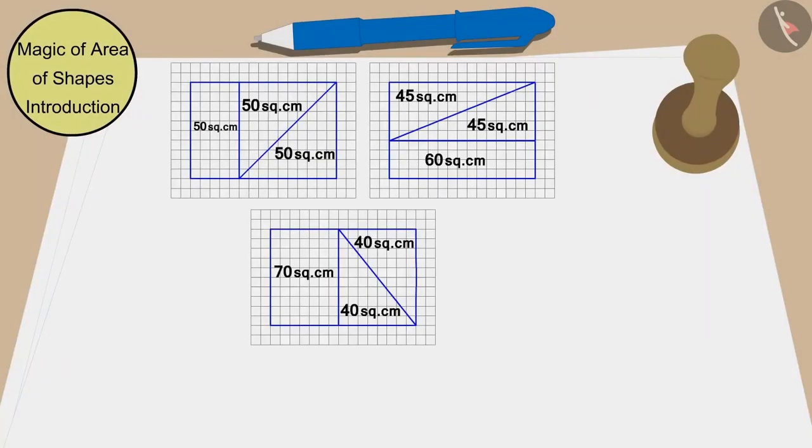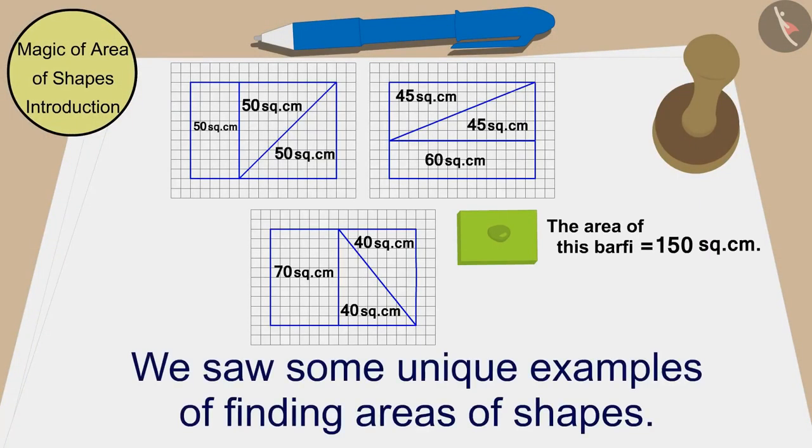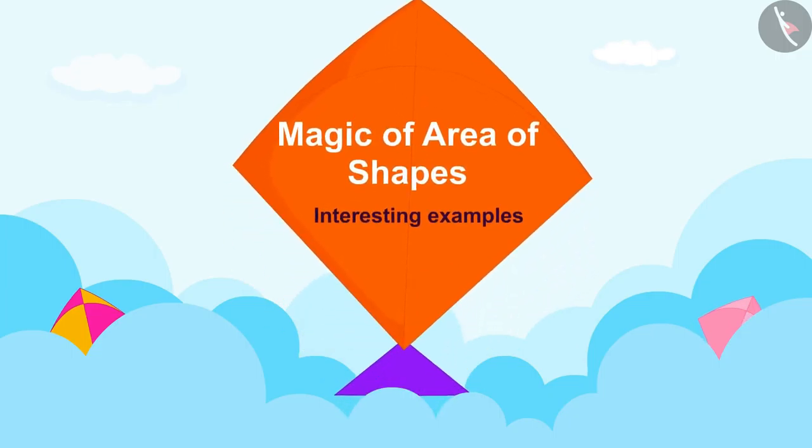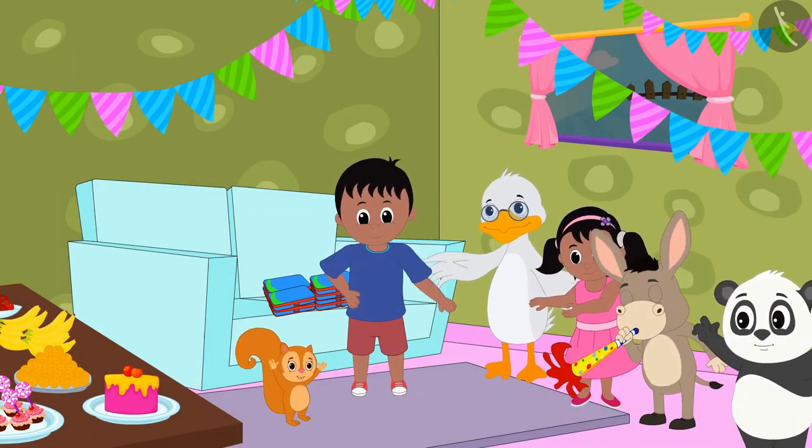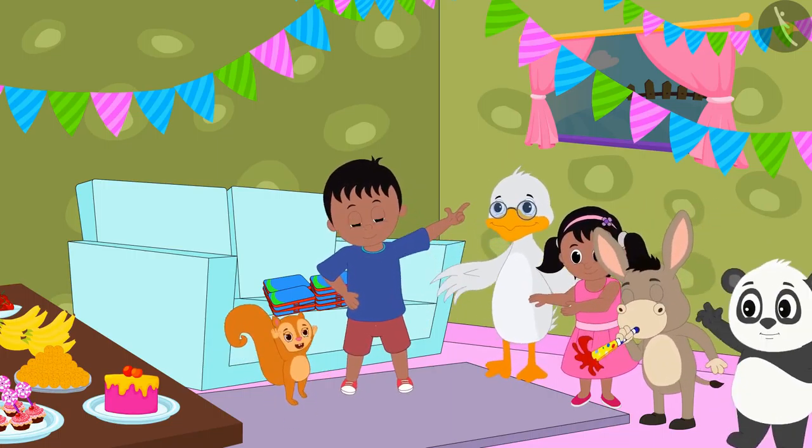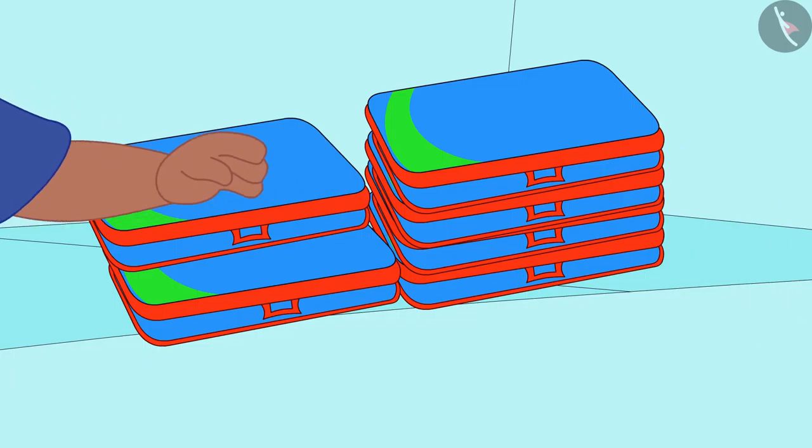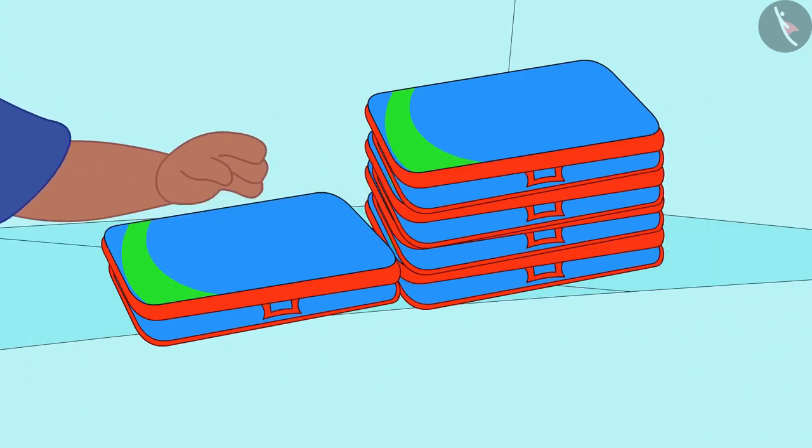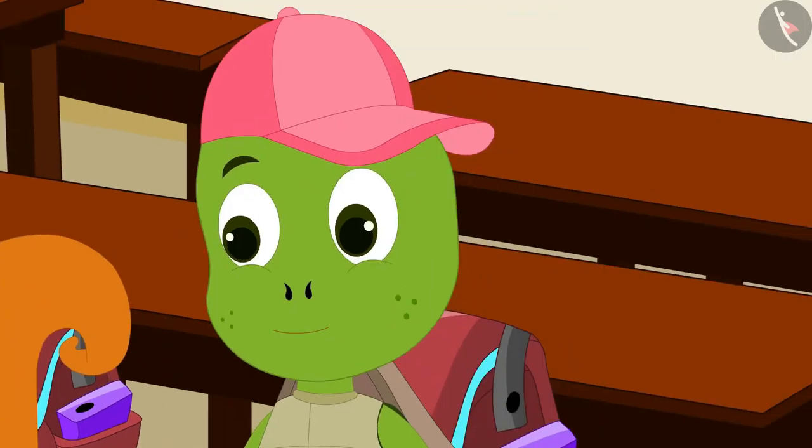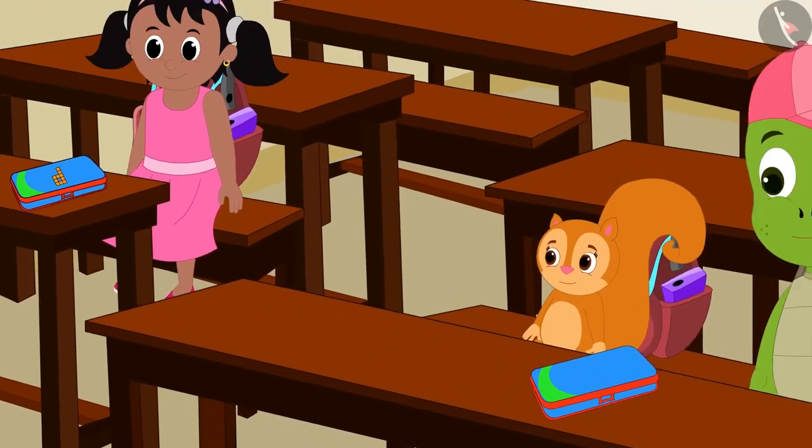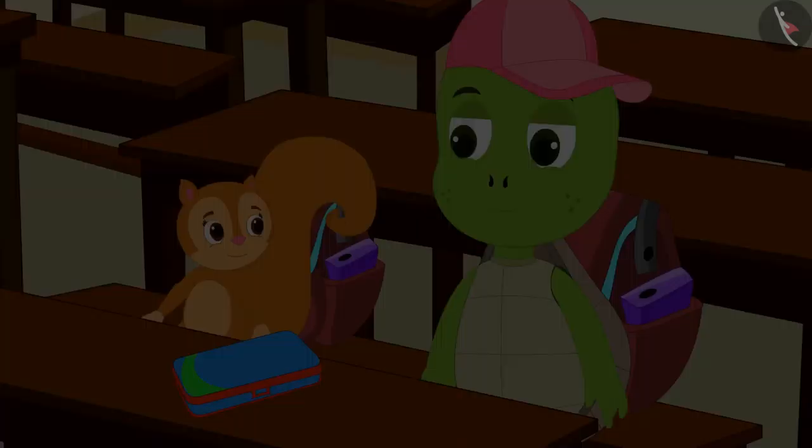Hello children, in the previous video we saw some unique examples of finding areas of shapes. In this video we will see some more interesting examples. At Raju's birthday party, Raju gave compass boxes of the same design to all the children. The next day, Pinky, Chanda and Tufan get excited and bring their new compass box to school.